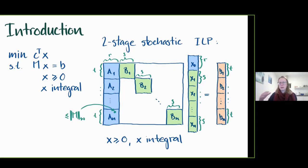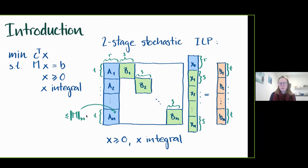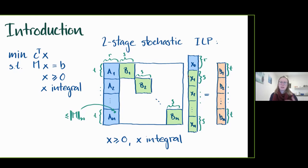What we actually want to show: we know already that these programs are fixed-parameter tractable, where the parameters are the sizes of the blocks — r, s, and t — which is how many rows and columns are in these small sub-matrices, and the infinity norm of the full matrix. We give a new approach and obtain a nearly linear time algorithm in the number of blocks.